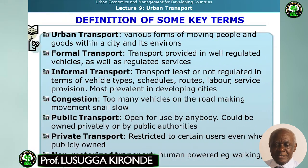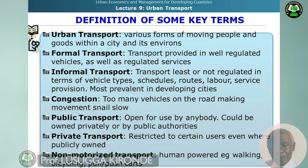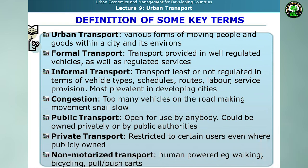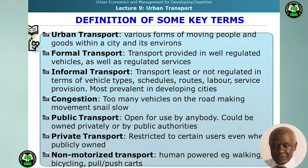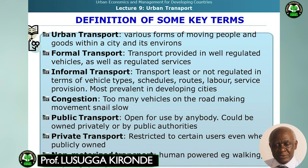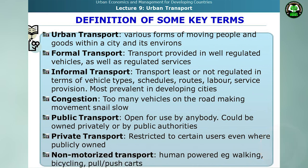We need to learn some key definitions. Urban transport means various forms of moving people and goods within a city and its environment. Formal transport is transport provided in well-regulated vehicles with regulated services. Informal transport is transport that is least or not regulated in terms of vehicle types, schedules, roads, labour, and service provision — and this is most prevalent in cities of developing countries. Congestion means there are too many vehicles on the road, making movement severely slow. Public transport means transport that is open for use by anybody — it is not about ownership, so it could be privately owned or owned by public authorities, as long as it is open to everybody.